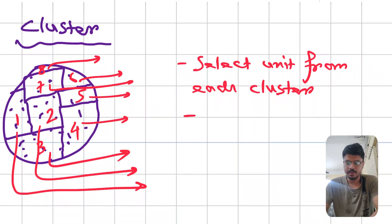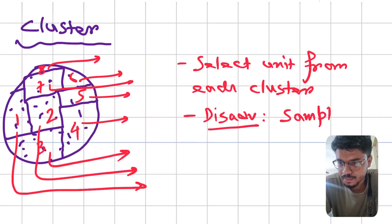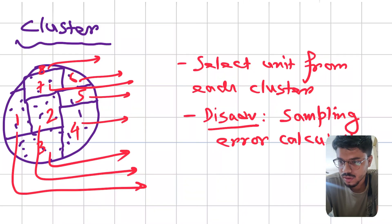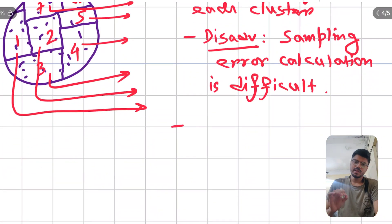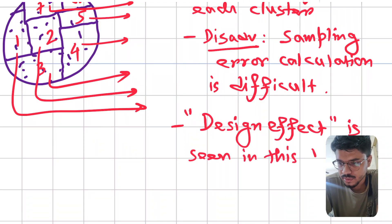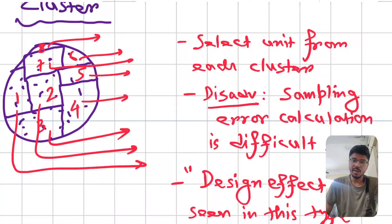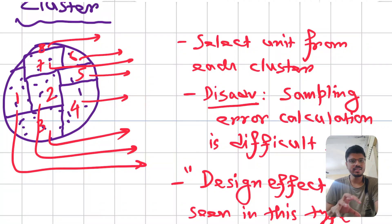Another disadvantage of cluster sampling is that a design effect is seen in this type of sampling. As an example, suppose in a state you have to observe immunization — you would use cluster sampling, where each cluster represents a district, and you select a sample from each district to observe immunization coverage.